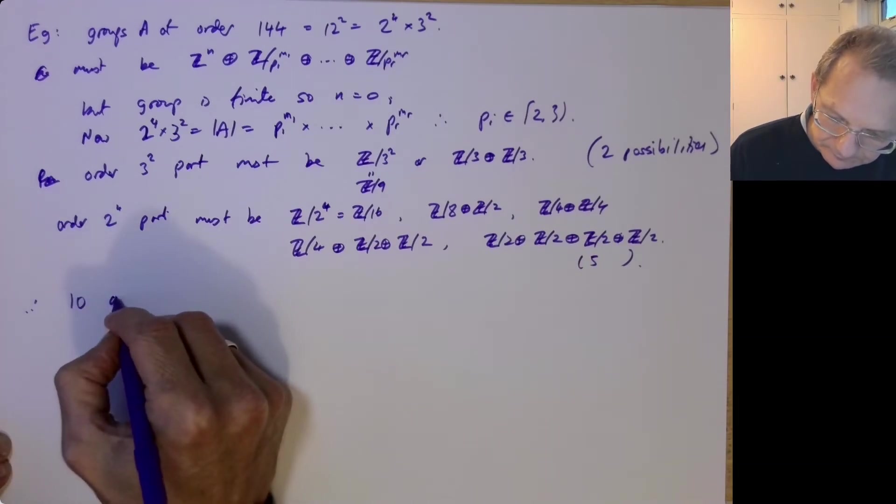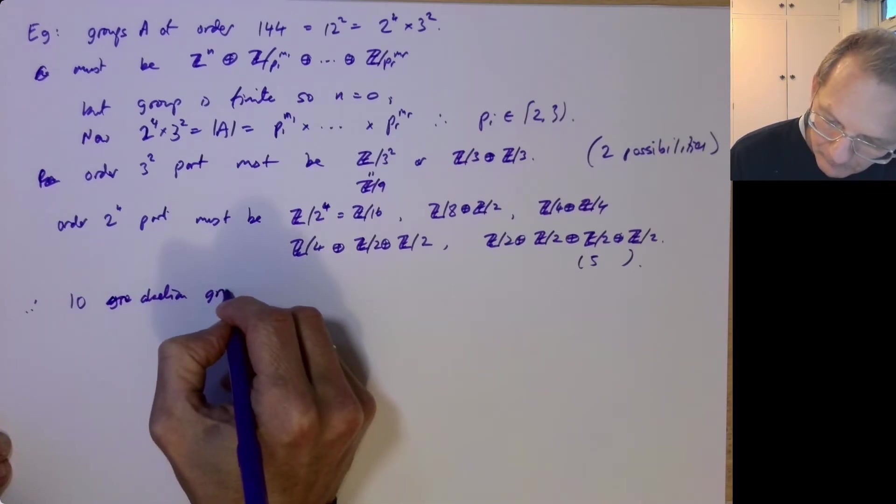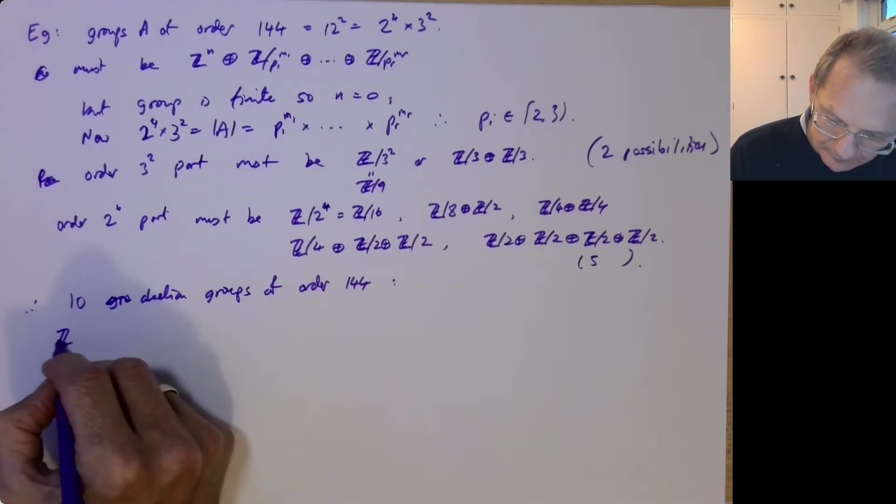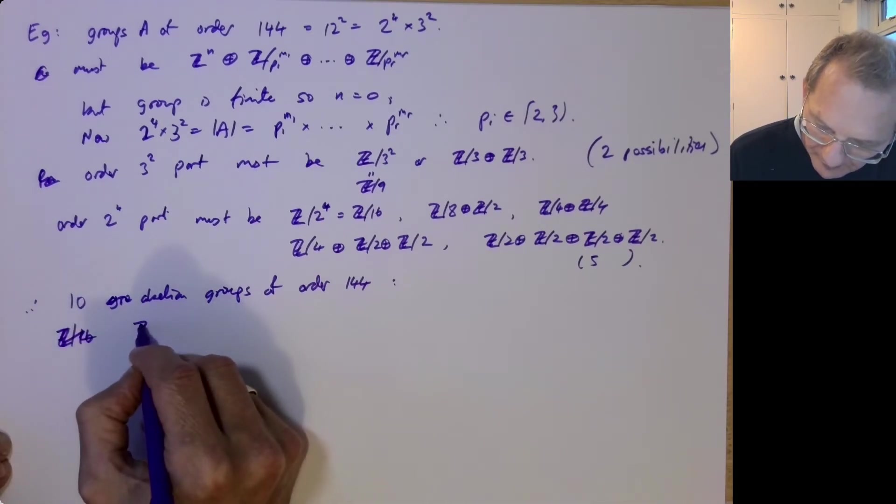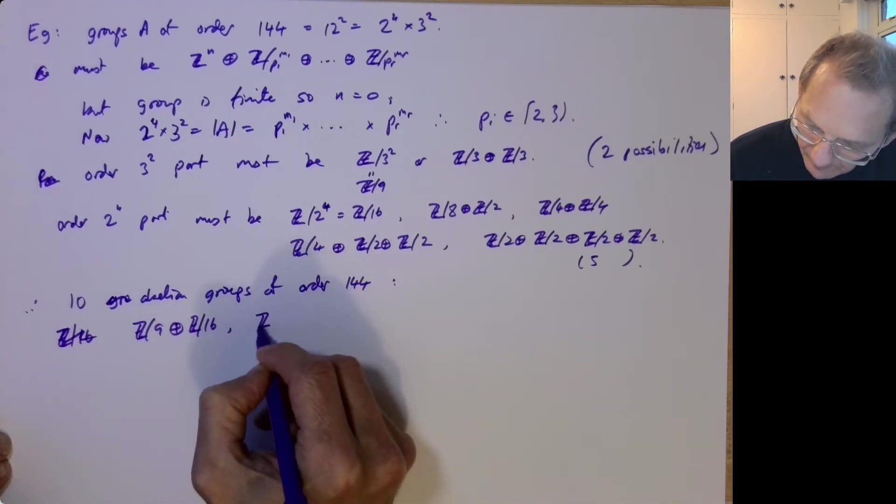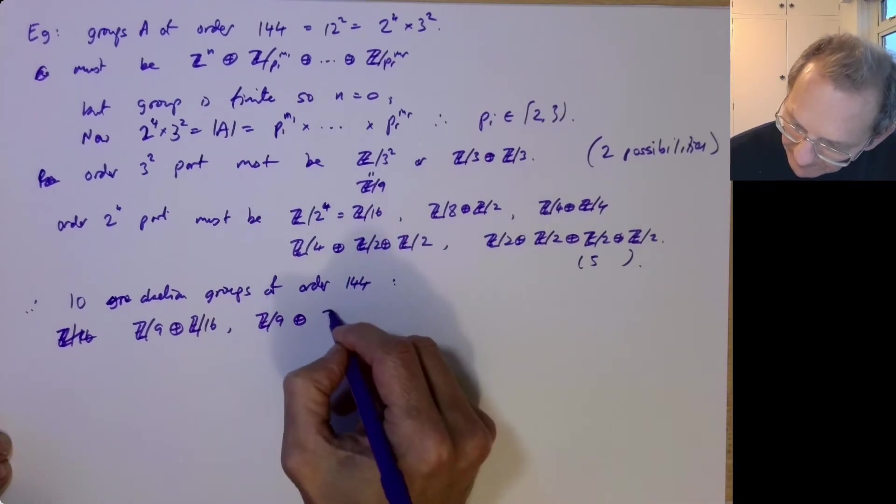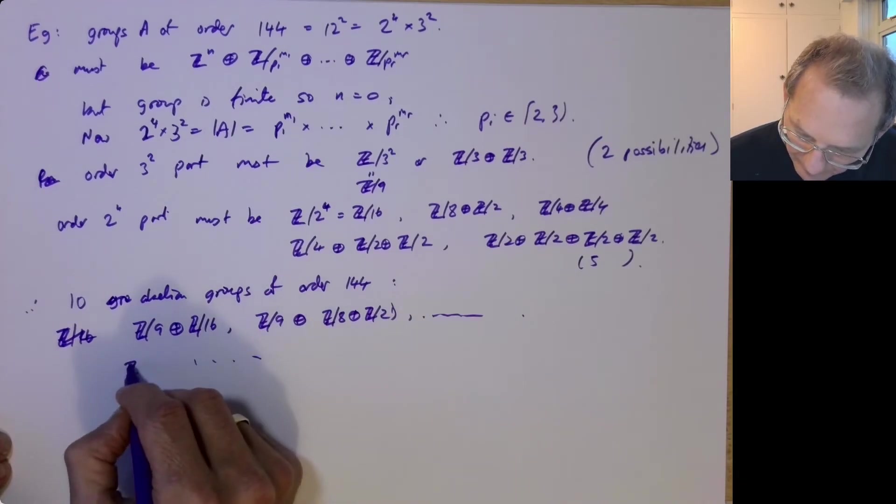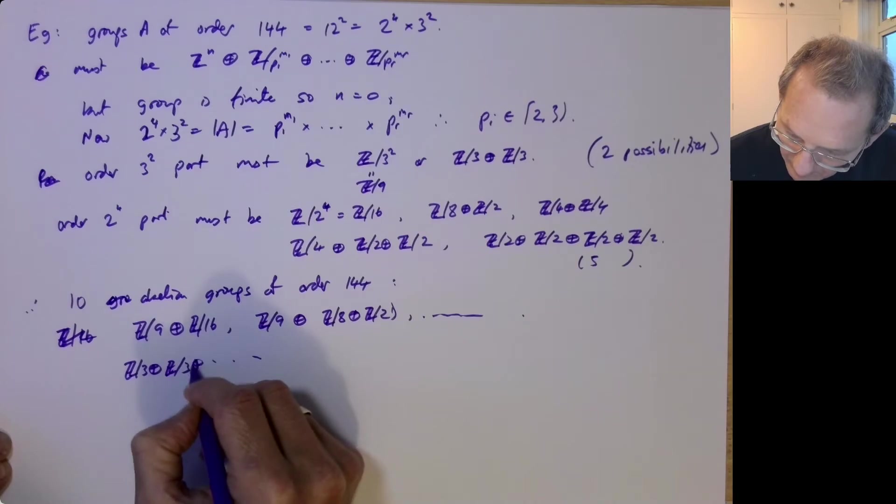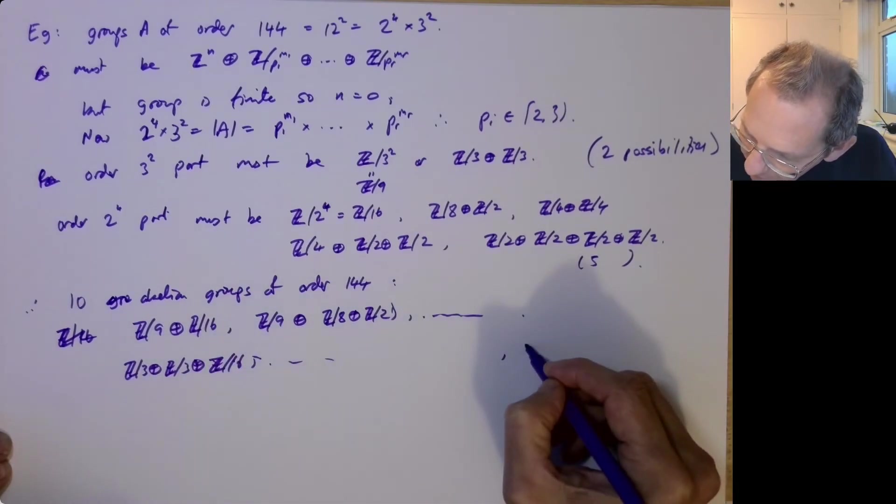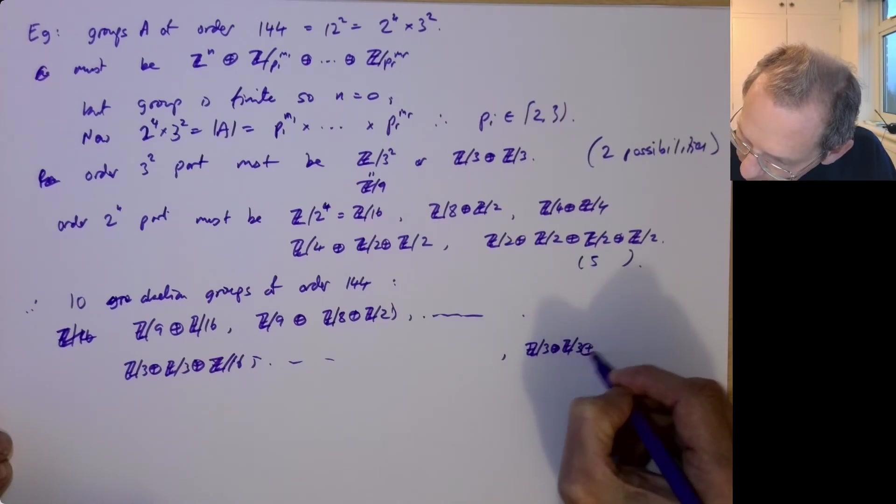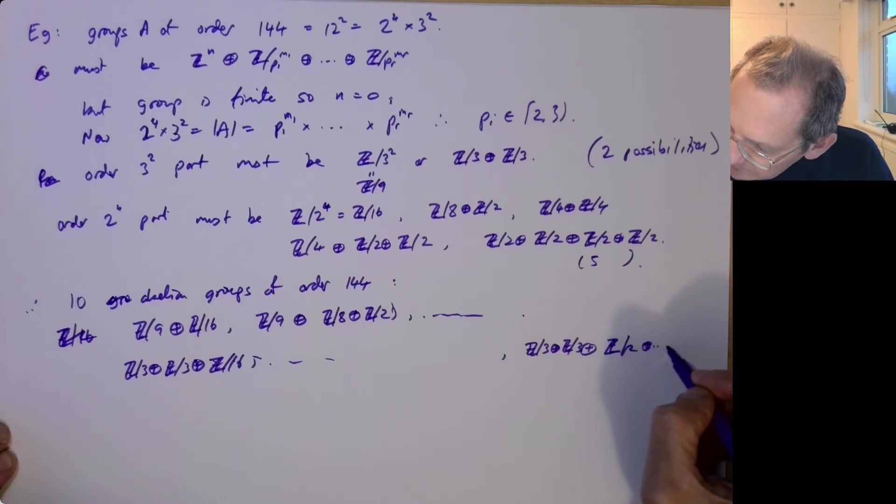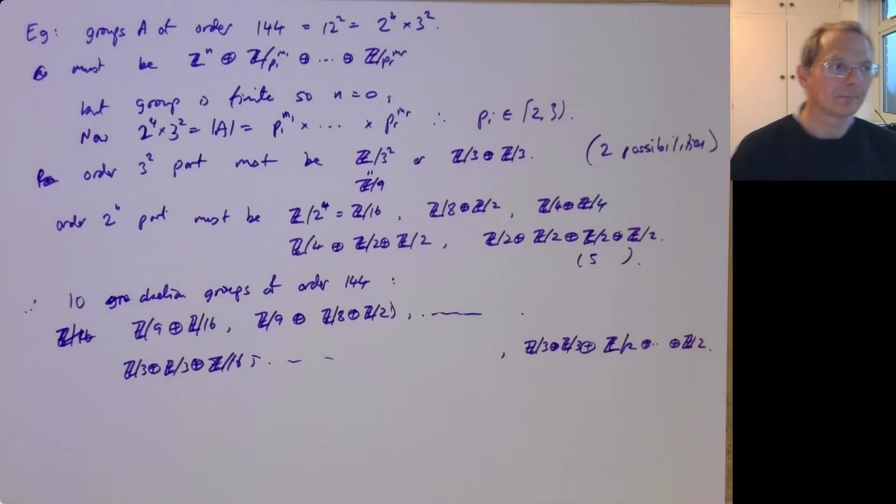So here we've got 2 possibilities and here we've got 5, therefore there's 10 abelian groups of order 144 up to isomorphism. So you've got Z mod 9 direct sum Z mod 16, Z mod 9 direct sum Z mod 8 direct sum Z mod 2, and then some more. These are Z mod 3 plus Z mod 3 plus Z mod 16, and then at the end you get Z mod 3 plus Z mod 3 plus Z mod 2 four times.